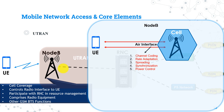Node B has an extra function compared to the BTS: it participates with the RNC in resource management for the sessions users conduct. It also has radio equipment like transceivers and antennas for cell coverage.